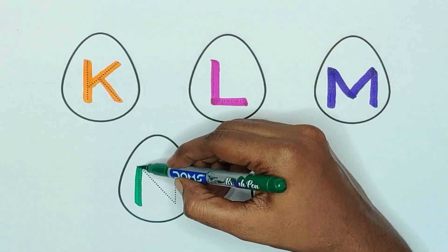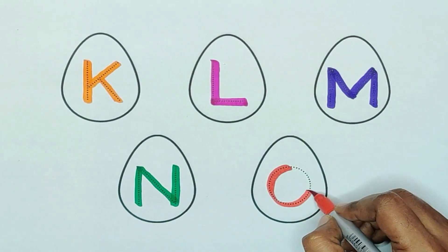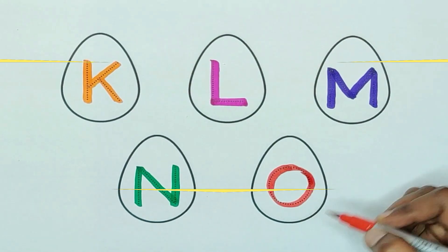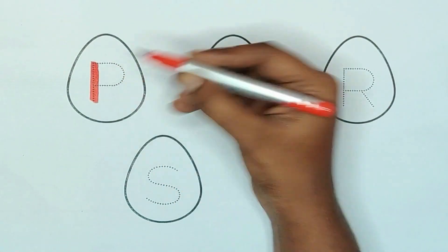Green color N, N for nose. Red color O, O for orange. Red color P, P for piano.